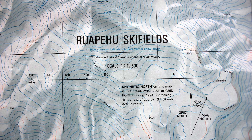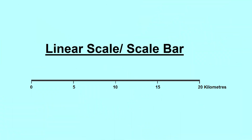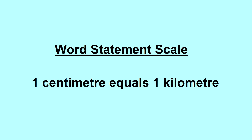The scale is used to express distance on a map. Some maps use a linear scale, also known as a scale bar. Some maps use a word statement to express scale — for example, one centimeter equals one kilometer.